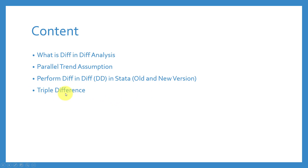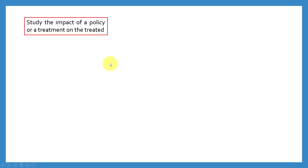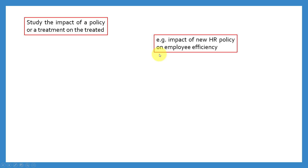We are also going to look into triple difference. So let's start with what difference-in-difference is and when we need it. If you want to study the impact of a policy or a treatment on the treated, it is a quasi-experimental technique. In social sciences, we usually cannot perform experiments, so these are quasi-experimental techniques that we can use to study the impact of a policy.